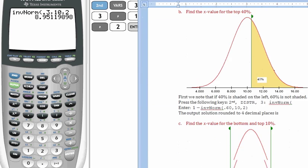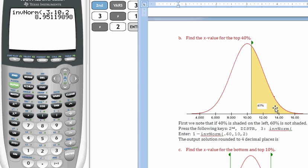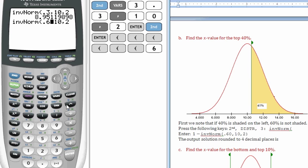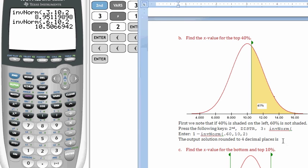Going on to the next one. Here we're given a proportion that's 40%, or the top 40%. The calculator will only accept shaded regions to the left. So we acknowledge that if 40% is shaded to the right, then 60% must be shaded on the left. So I'm going to just enter 60% here. 60% and this will give me the output of approximately just over 10, which is what we expected. So the solution here, or the x value solution, is 10.5067. So the x value rounded to 4 decimal places is 10.5067.